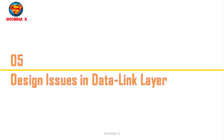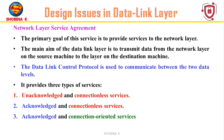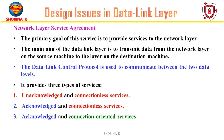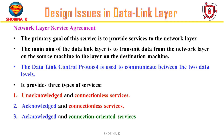Now let's understand the design issues of the data link layer. Design issues are the challenges and considerations that arise when designing protocols and systems at the data link layer. These issues encompass aspects like how to provide services to the network layer, how to synchronize frames, how to control the flow of data, and how to handle errors. The functions describe what the data link layer does, whereas design issues address how those functions are implemented and what considerations need to be taken into account to ensure effective and efficient operation.